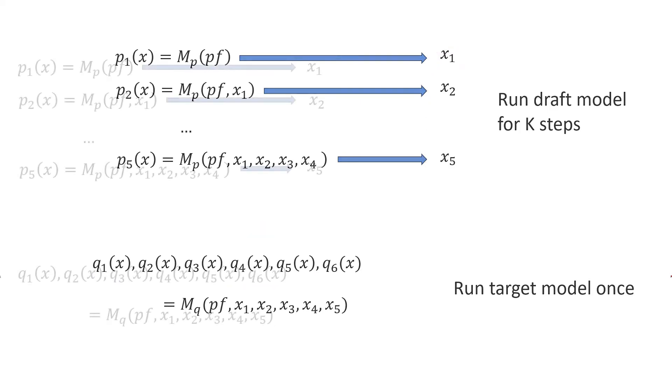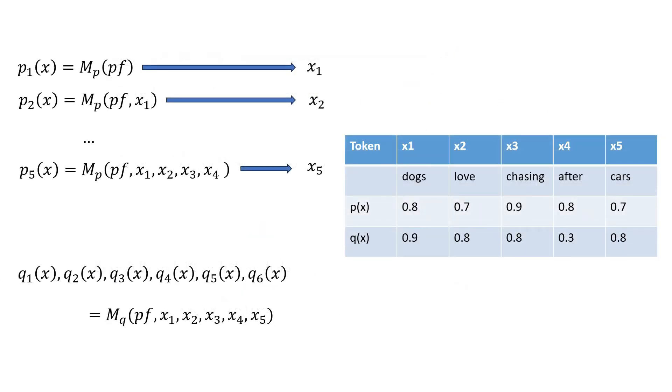So to recap, at this point, we should have something like this. We have a sequence of five tokens that are generated by the draft model. We also have the probability distributions of each step of this generation. And for simplicity sake, just to illustrate in a table format, I've only shown the probabilities of these five tokens. But remember that these are actually probability distributions as well over all the tokens in the vocabulary. And finally, we have the probability distributions from the target model for the same tokens.